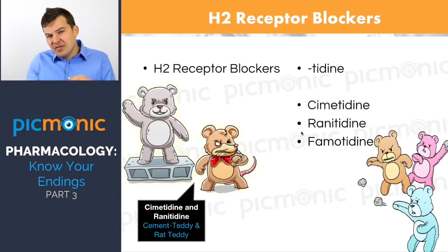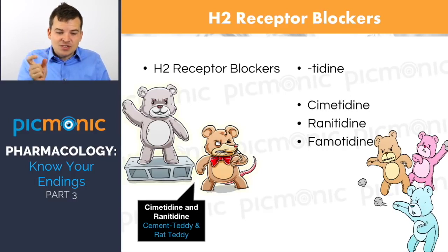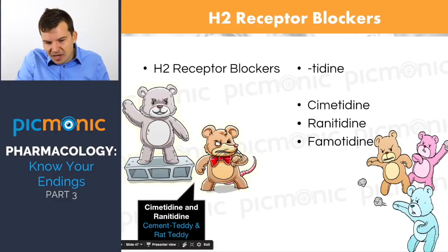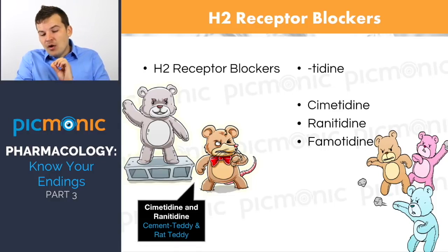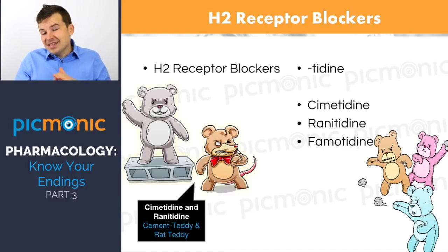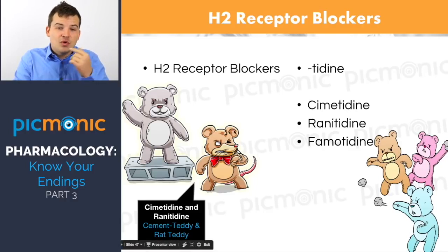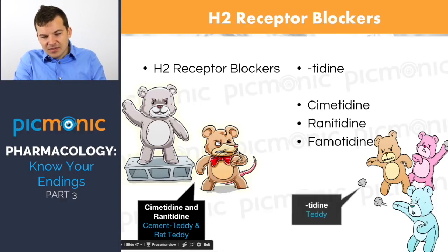H2 receptor blockers — we just said PPIs work better than these. They end in -tidine: cimetidine and ranitidine, our cement teddy and rat teddy Picmonic characters. These medications block H2 hydrogen receptors to keep acid production down. Cimetidine has more side effects than ranitidine because it's an older generation drug. PPIs are most likely what's being used, but it's good to remember the -tidine ending for these acid-reducing drugs.